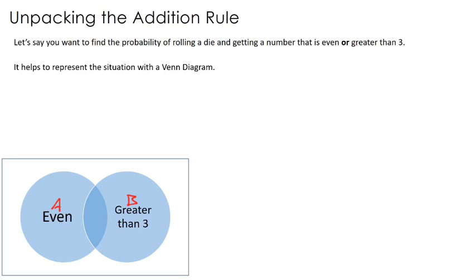Thinking about all possible die rolls: an even number could be 2. Then 4 is also even, but 4 is also greater than 3 — so 4 is both even and greater than 3. Numbers greater than 3 but not even would include 5. And then 1 and 3 are neither, because 1 is not even nor greater than 3, and 3 is not even or greater than 3. So the Venn diagram helps us understand our situation.